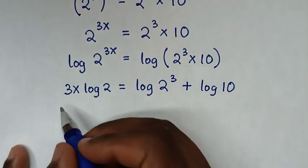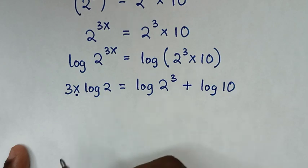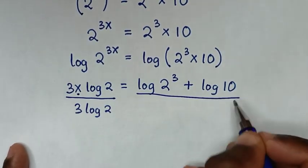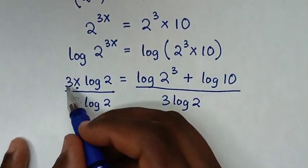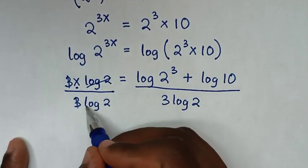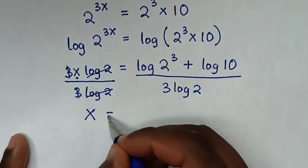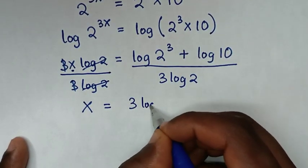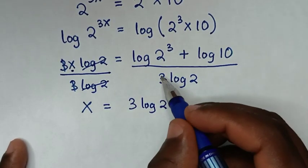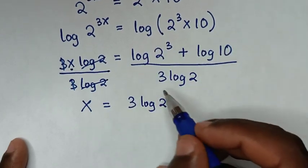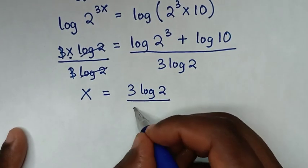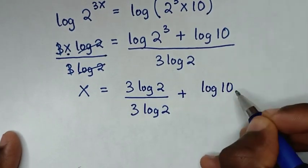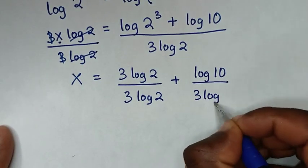Then, in the next step, we are going to find the value of x, so we will divide by 3 log of 2 on both sides. This 3 and this 3 will cancel, and log of 2 and log of 2 will cancel. Then it will be x is equal to — this power of 3 will move to the base — so it will be 3 log of 2 plus log of 10, divided by 3 log of 2.